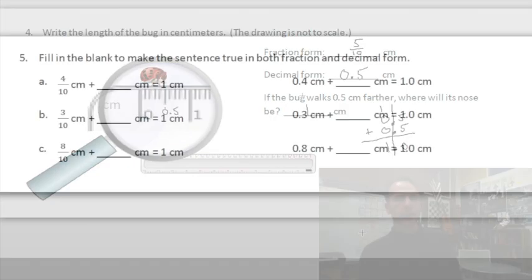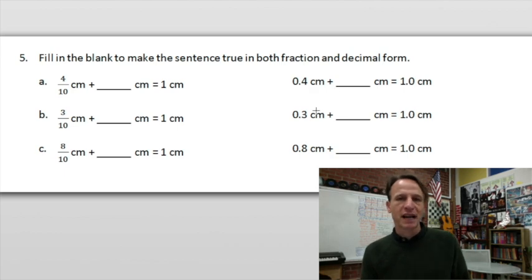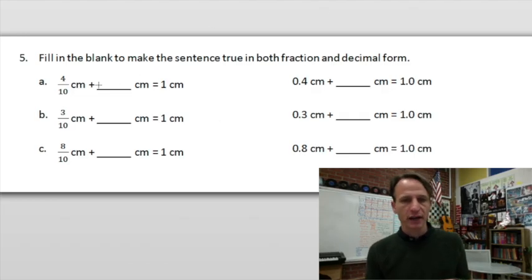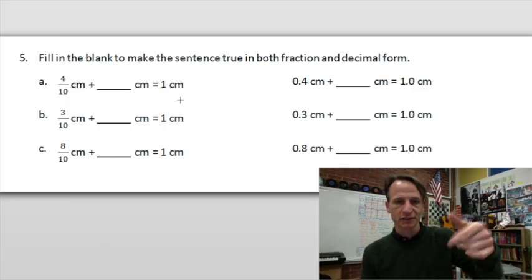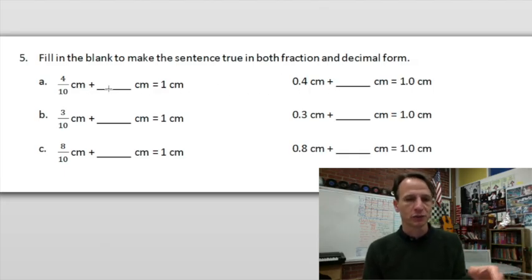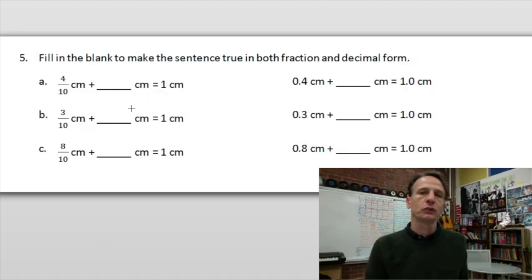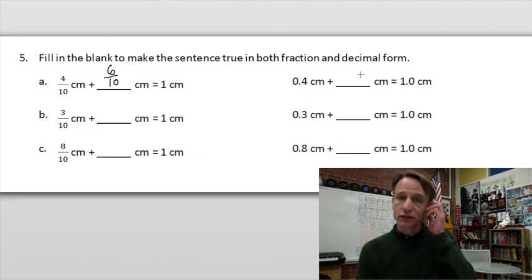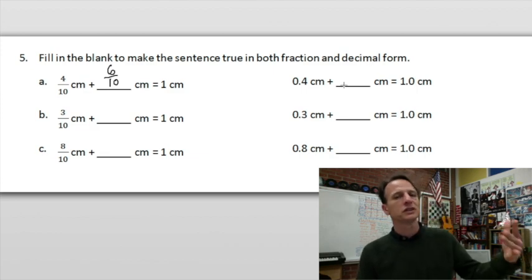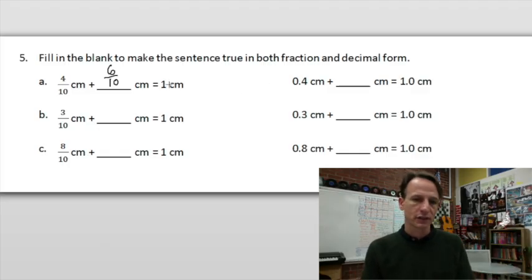Number five — fill in the blanks to make the sentence true in both fraction and decimal form. These are paired up: four tenths centimeters plus blank centimeters equals one centimeter. Four plus what makes ten? Six tenths! Four tenths plus six tenths makes one whole — nothing new from fraction land, just applied to decimals. Six tenths in decimal form is 0.6.